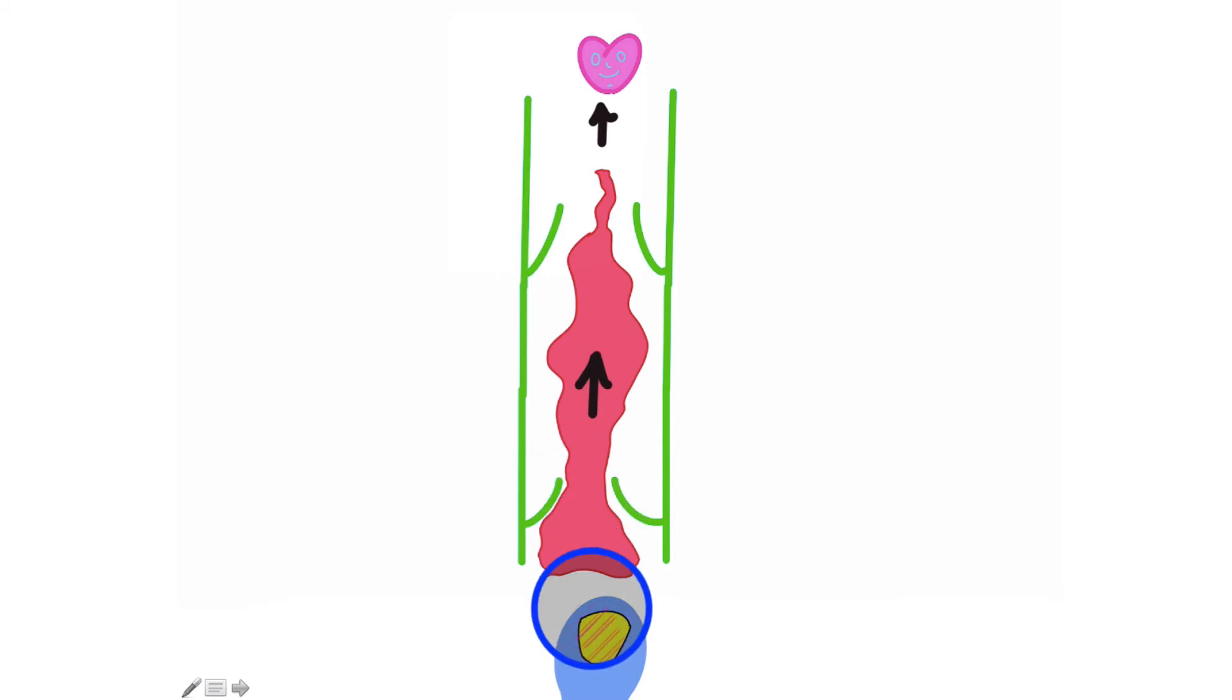Blood flows from, say, the big toe to the heart. I tend to say the big toe just because that is the farthest away blood can be from the heart. And it's moving from the big toe all the way back up to the heart, opposing gravity. Now, keep in mind, I'm talking about in the legs at this moment.